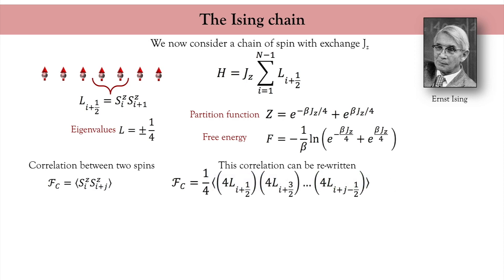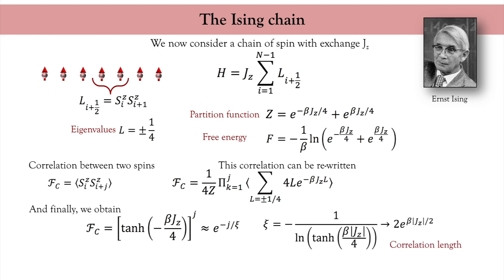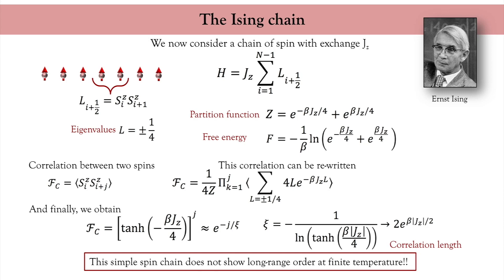Performing this calculation, I obtain an expression for the correlation function that behaves essentially as an exponential decay with a characteristic length xi. This characteristic length is an exponential function of the inverse temperature. In other words, at any nonzero temperature the correlation length is finite, meaning that magnetic order only survives over finite distances. Therefore, there is no real magnetic order and no magnetic phase transition in this system.